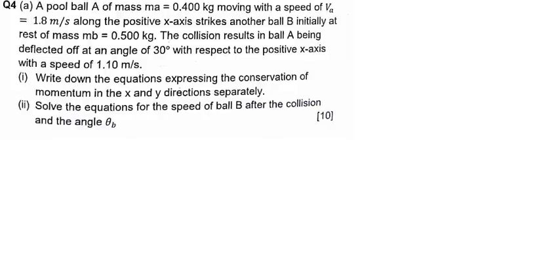Let's try to solve another question using the same concept from the previous question. The question is: ball A of mass MA = 0.400 kg moving with a speed VA = 1.8 m/s along the positive x-axis strikes another ball B, initially at rest, of mass MB = 0.500 kg. The collision results in ball A being deflected at an angle of 30 degrees with respect to the positive x-axis with a speed of 1.1 m/s.